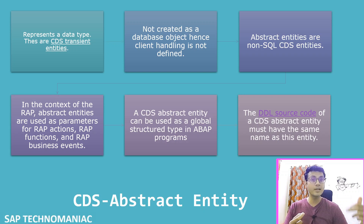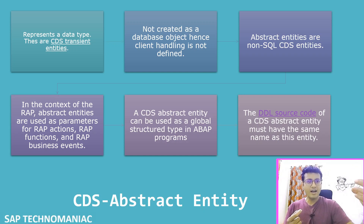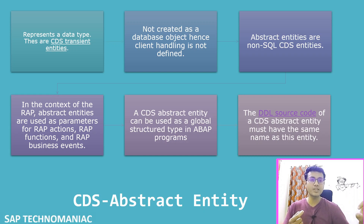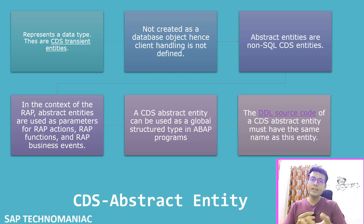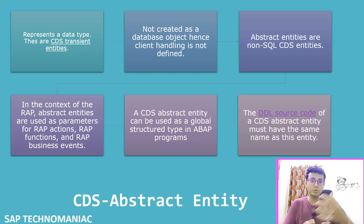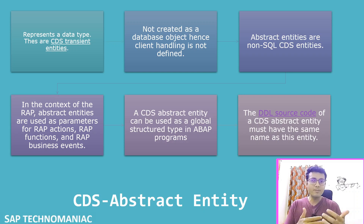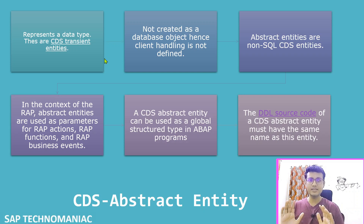It will not have a real-time object at the database level. When we create a regular CDS view, it creates a real-time data object — a view — which is used to fetch data from the database. But when you create a CDS abstract entity, you are just defining a structure: a skeleton indicating where data can be stored and what kind of data types to use when filling that structure.